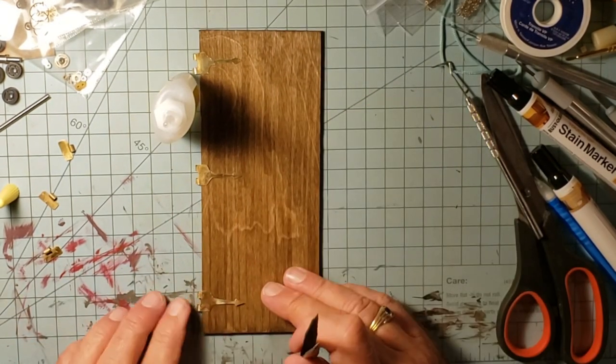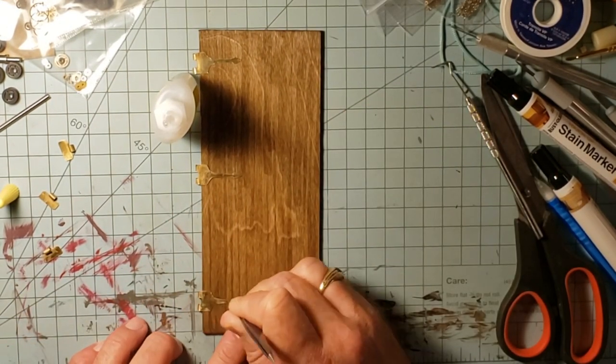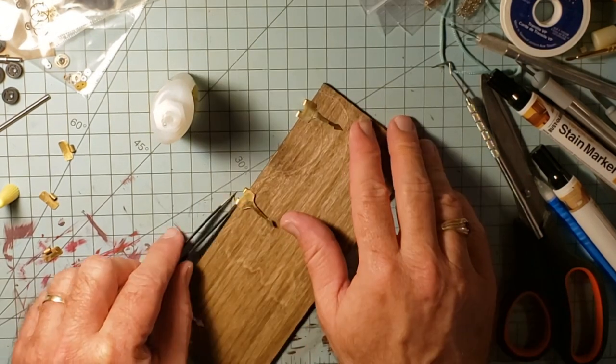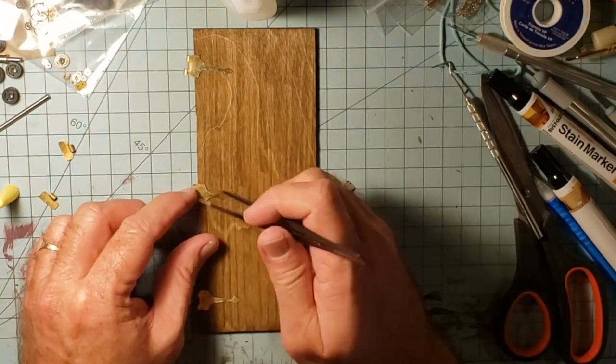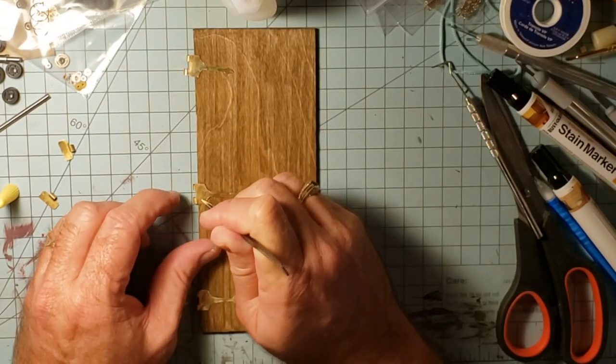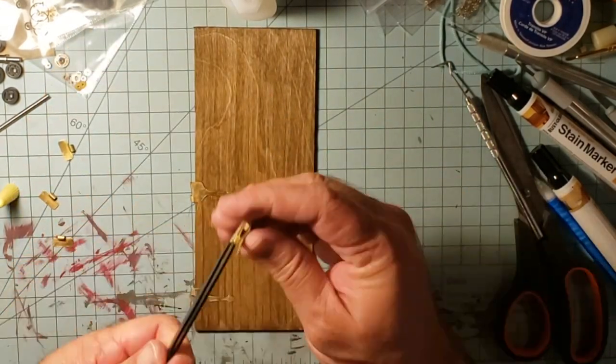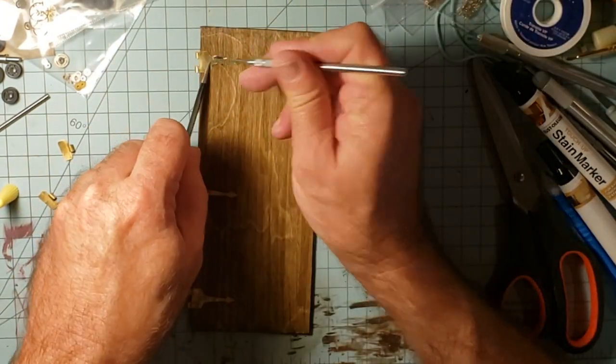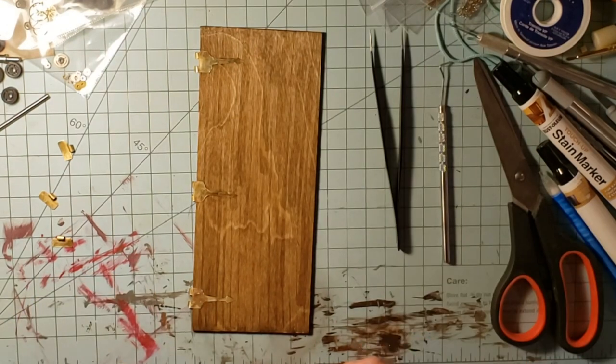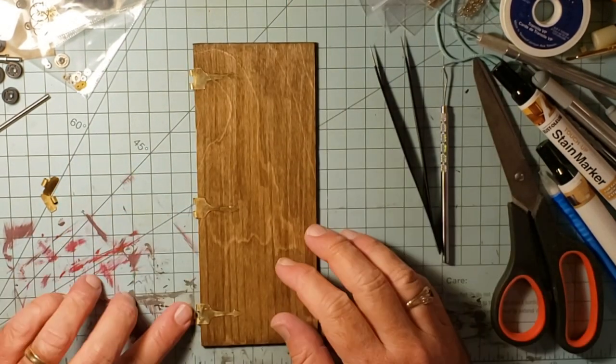I'm just going to glue those in place. All I'm doing is I'm just butting it up against the hinge that's being held by the tweezers there so that it's all flat and even and nice and straight. And there you can see that middle one I missed by about half an inch. I was trying to line it up with the grid on my mat, but I picked the wrong line to line it up to.